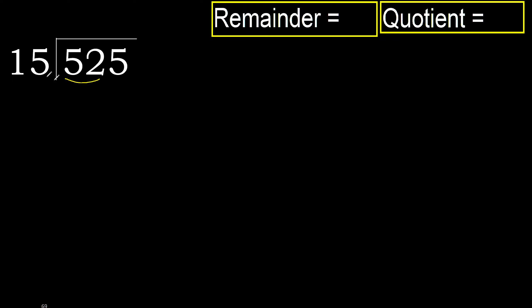52 is not less than 15, so with 52 we find which number 15 multiplied by is nearest to 52 but not greater. 15 multiplied by 4 is 60 — 60 is greater. 15 multiplied by 3 is 45 — 45 is not greater.